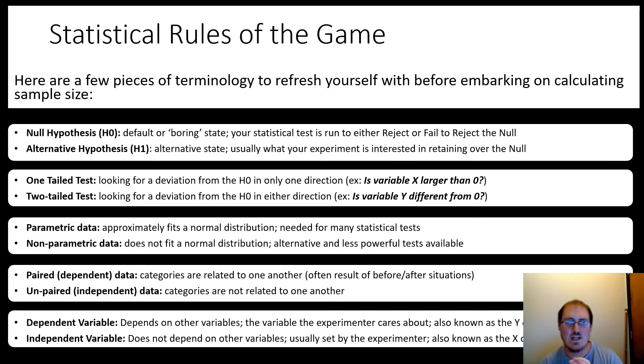The next set here is tails. So there's a thing called a one-tailed test and a two-tailed test. The one-tailed looks for deviation from that null hypothesis in only one direction. So the idea would be, is variable x, say, larger than zero?